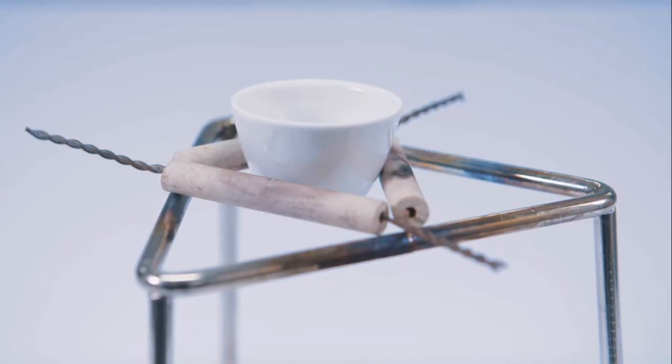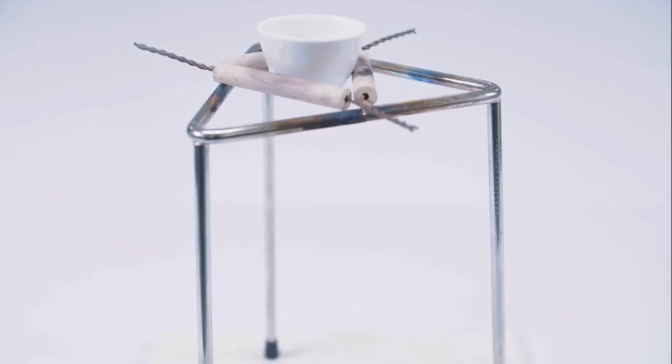First, place a porcelain crucible on a pipe clay triangle supported by a metal tripod. Ensure that the crucible is seated firmly and that the tripod is placed on a heatproof mat.